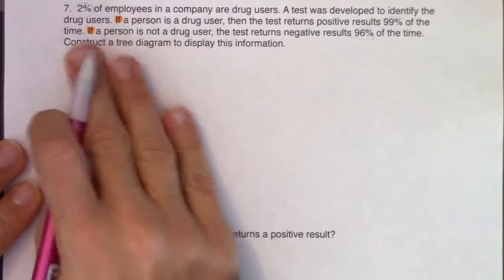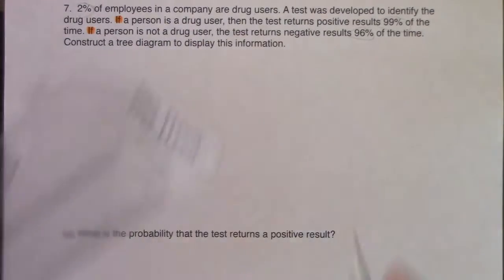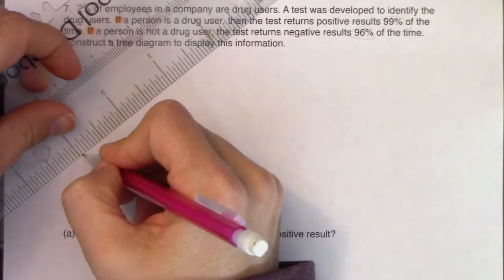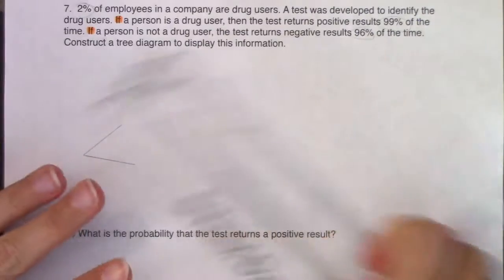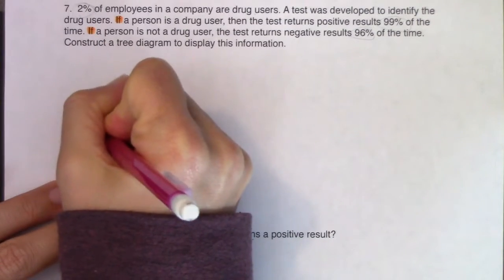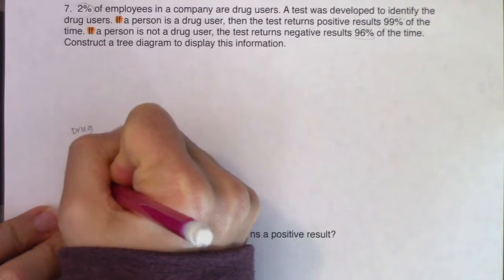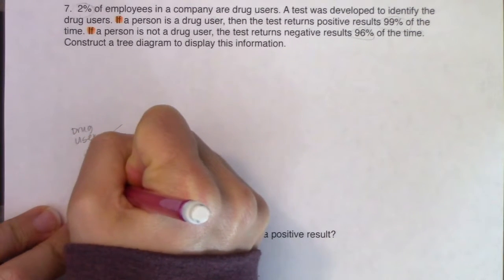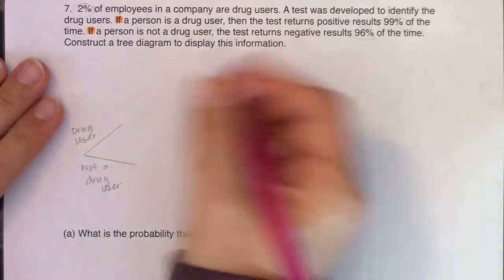That makes sense because I've got the condition about whether I'm a drug user or not. So let's set up this tree diagram. I've got my first set of branches — over here we're going to have 'drug user' and 'not a drug user,' because the only categorical variables in this problem are yes I use drugs or no I don't. And then based on that, how did my drug test go? Did it flip positive or negative? So it says right here, 2% of employees are drug users.